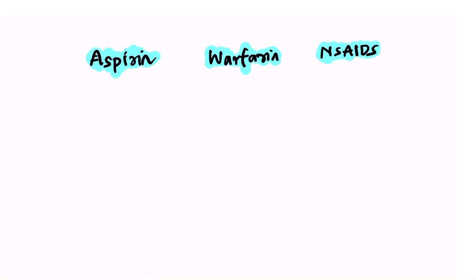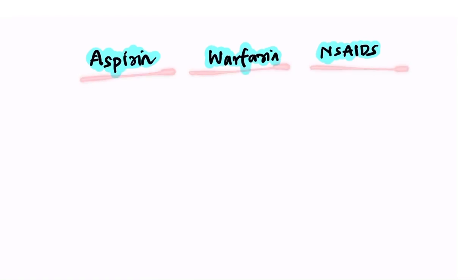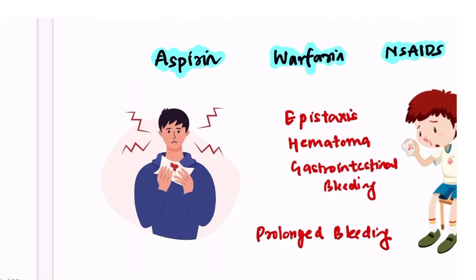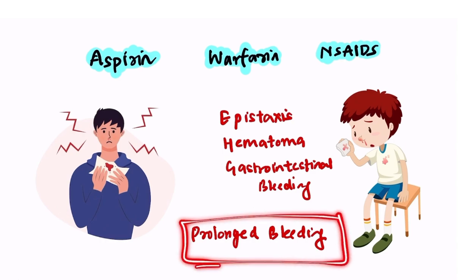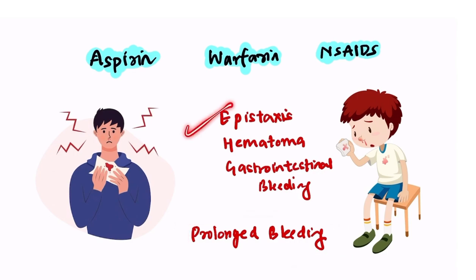Regarding drug interactions, when paroxetine is used in a person who is already on aspirin, warfarin, or NSAIDs, there is an increased risk of bleeding and prolongation of bleeding time, which can lead to epistaxis, hematoma, and gastrointestinal bleeding.